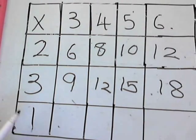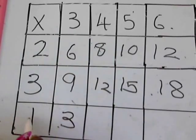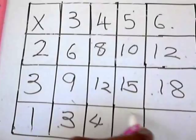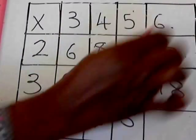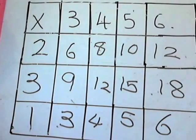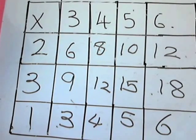1 times 3, that's 3; 1 times 4, that's 4; 1 times 5, that's 5; 1 times 6, that's 6. Easy, isn't it? Did you understand? Did you find it easy? If not, just go over the video once more.